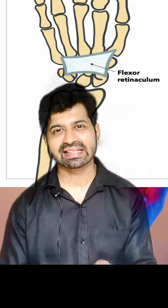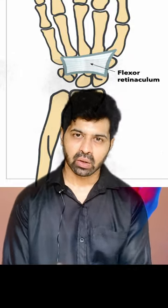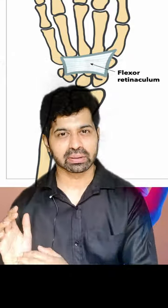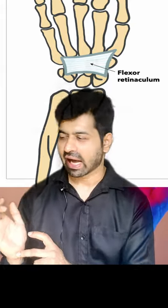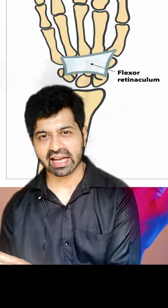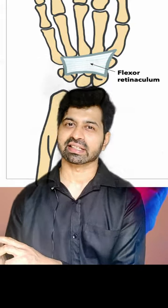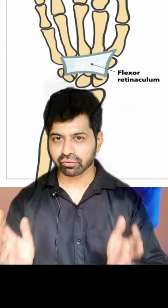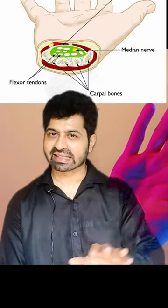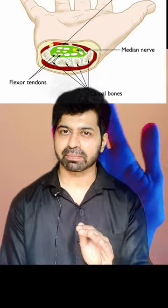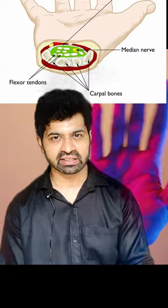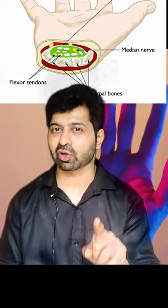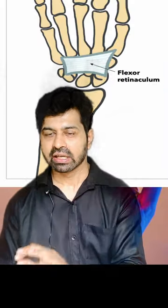with its attachment on one side on the pisiform and hamate, and on the other side on the scaphoid and trapezium. As you can see, there are these carpal bones underneath, and this fibrous band is called the flexor retinaculum.